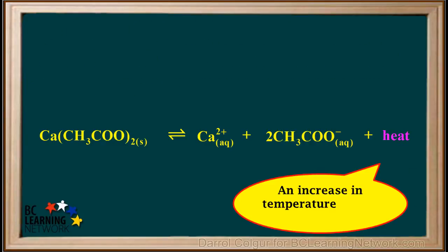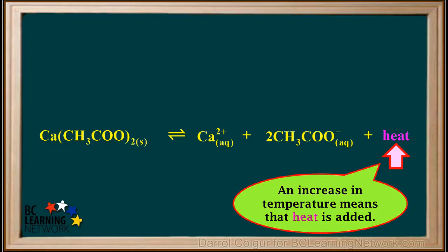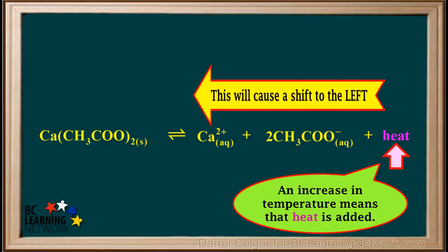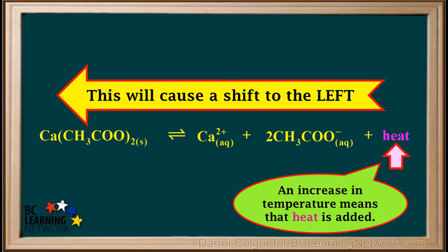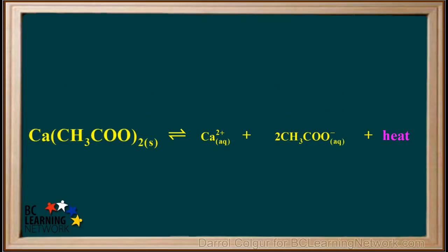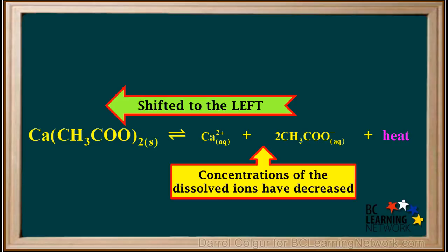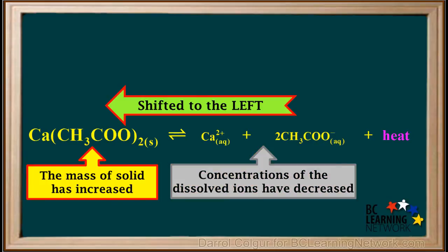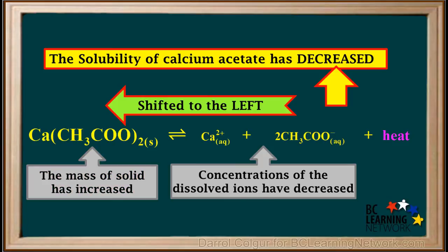Let's see what happens when we increase the temperature of a saturated solution of calcium acetate. Increasing the temperature means we are adding heat to the system. According to Le Chatelier's principle, this will cause the equilibrium to shift to the left in order to use up some of the excess heat. A shift to the left occurs like this. We can see that as a result of the shift to the left, the concentrations of the dissolved ions have decreased, and the mass of the solid calcium acetate in the container has increased. Because there is more solid and less dissolved ions, we can say that the solubility of calcium acetate has decreased.